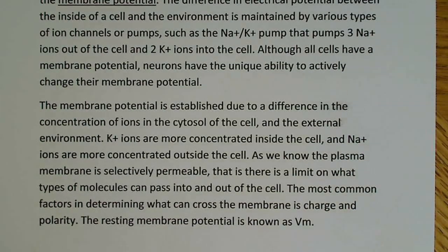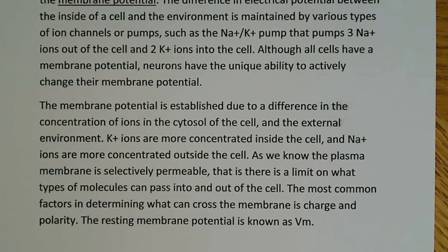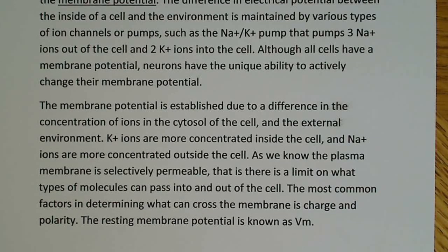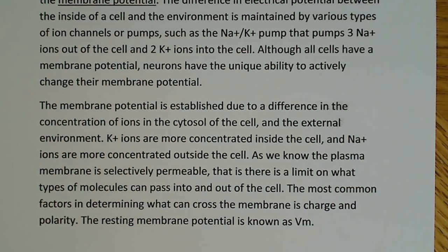The membrane potential is established due to a difference in concentration of ions in the cytosol of the cell and the external environment. K+ ions are more concentrated inside the cell, and Na+ ions are more concentrated outside the cell. The plasma membrane is selectively permeable — there is a limit on what types of molecules can pass into and out of the cell. The most common factors for determining what can cross the membrane are charge and polarity, and also size can play a role.